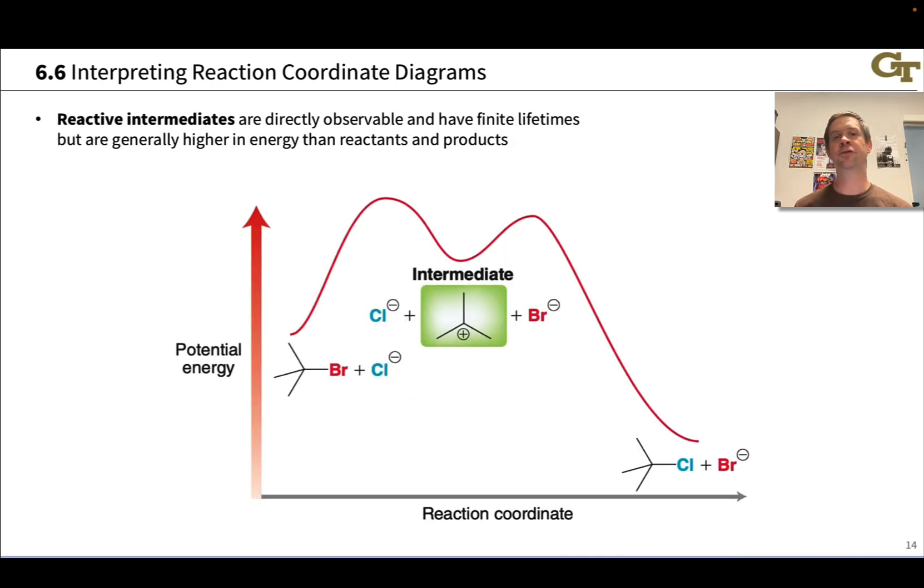Reactive intermediates show up in these valleys on reaction coordinate diagrams and these are directly observable and have finite lifetimes because they're living in an energy valley. So it actually takes some energy to convert a reactive intermediate into some other structure. There's an activation energy for anything that this structure is able to do.